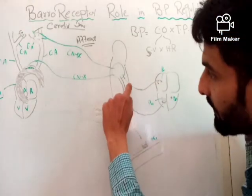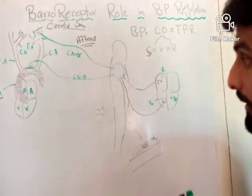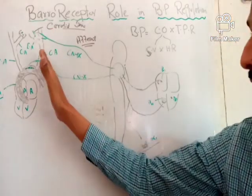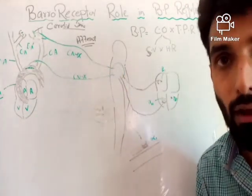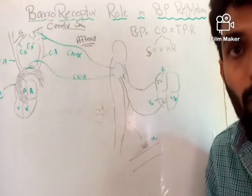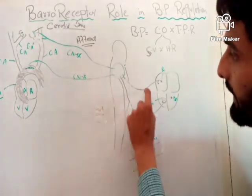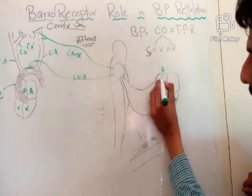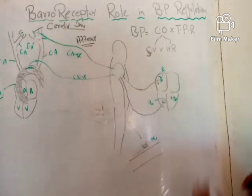When the neurotransmitter released from sympathetic nerve fibers — epinephrine and norepinephrine — acts on the pacemaker cells of the heart, it results in an increase in heart rate. The sympathetic system is trying to compensate for the decreased blood pressure that was sensed by the baroreceptors and relayed to the medulla. In response, the medulla activated the sympathetic nervous system, which is now working to increase blood pressure.